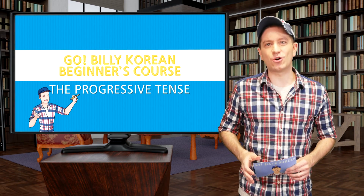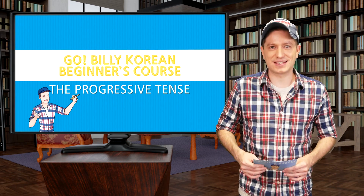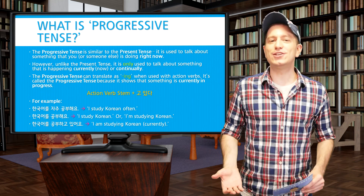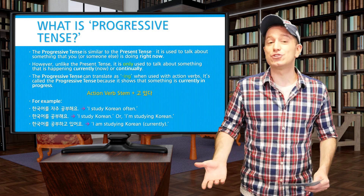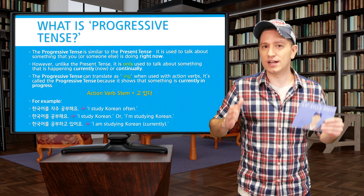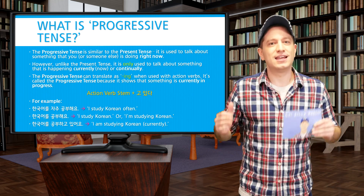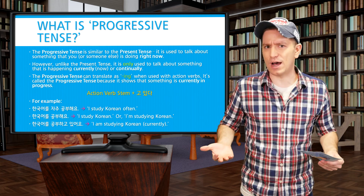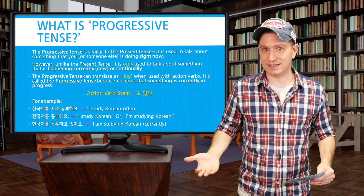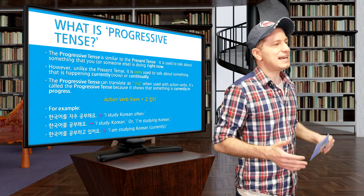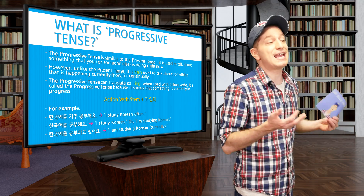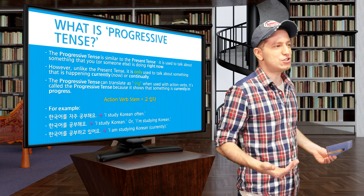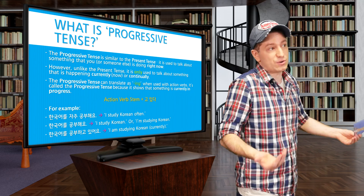Welcome back. In this lesson we're going to learn about the progressive tense. Now the progressive tense, just like the present tense, can be used for talking about something that you're doing right now. However, unlike the present tense, the progressive tense can only be used for something that's happening currently, right now, or continually. The progressive tense can translate as '-ing' when it's used with any action verb, and it's called the progressive tense because it's used to show that any action is currently in progress.